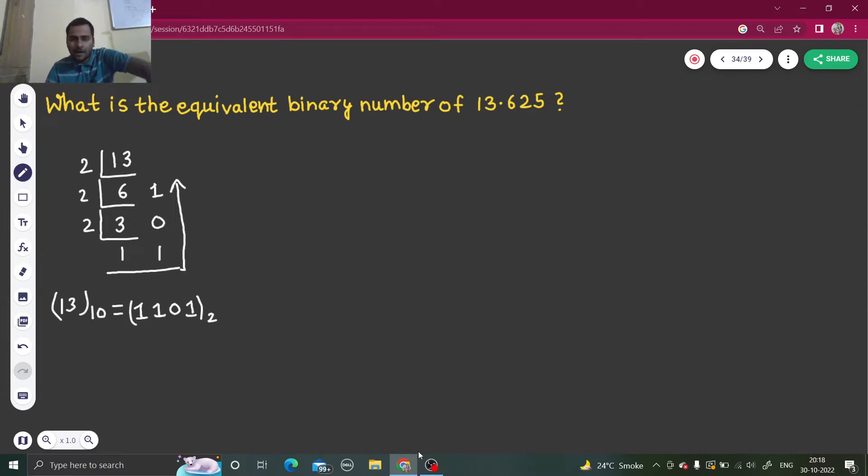Now what about 0.625? Take 0.625 multiplied by 2.